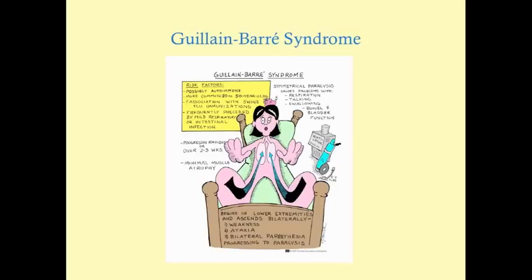The disease progresses over a few weeks with minimal muscular atrophy — because it doesn't last long enough to produce the atrophy seen in other lower motor neuron disorders like ALS. It is a symmetrical disorder, consistent with its autoimmune nature, and almost always starts in the lower extremities. There are variants, most notably the Miller Fisher variant, which is associated with bulbar and facial disorders affecting talking and swallowing.